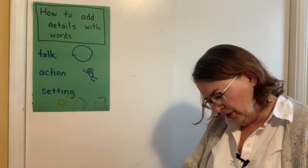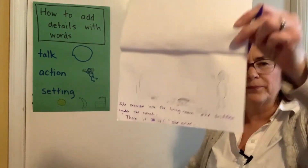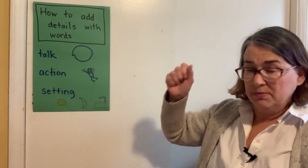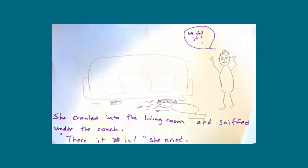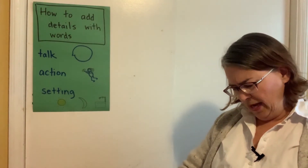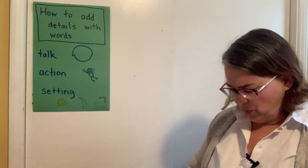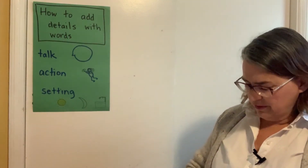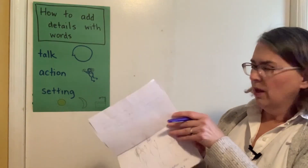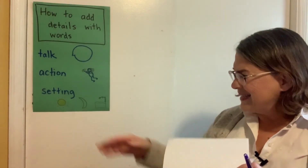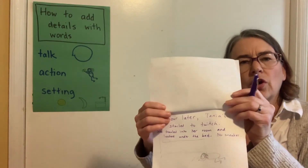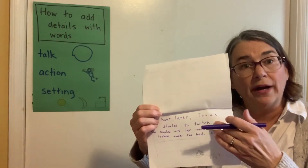'There it is! She cried.' I already had 'There it is.' And what can I say about the brother? Maybe he jumped up and down, or I'll put it in talk: 'We did it!' Because her brother's so happy that it worked. So did you see what I did there? I had my story Puppy Potion and I was trying to add detail with words. It helped me to think: what action could I show? And what setting — what place or time — could I add to show more about that story?